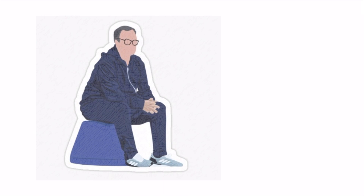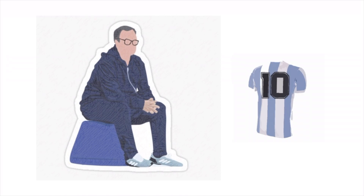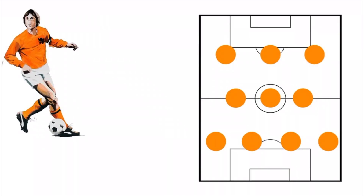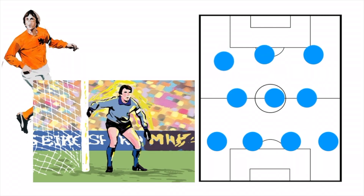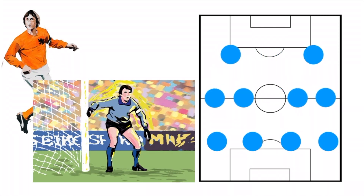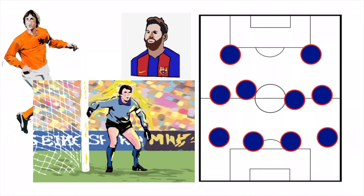The game manager Marcelo Bielsa said that there are no more than 10 tactical systems in football. These tactics went through different phases in the history of football. For example, the 4-4-3 of the Dutch Total Football, the Italian Catenaccio, and the Tiki-Taka of FC Barcelona.